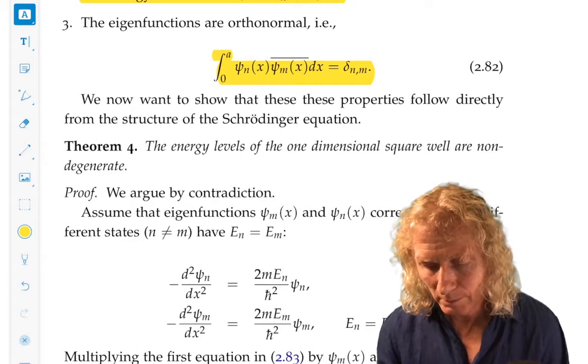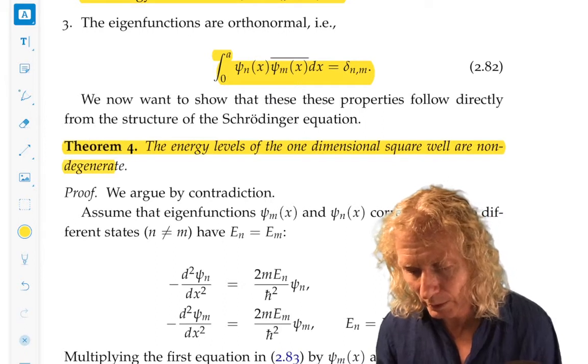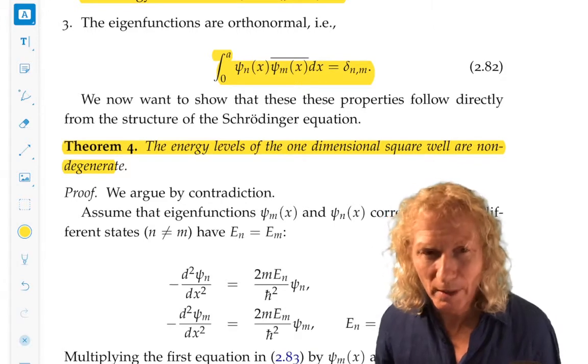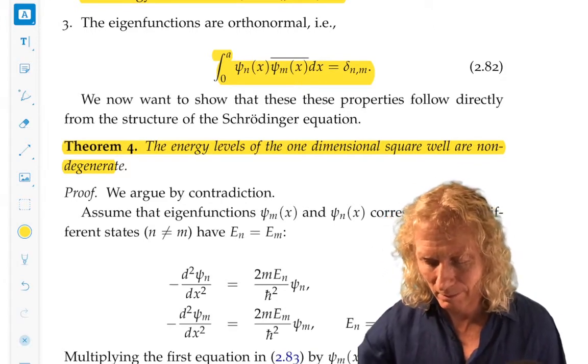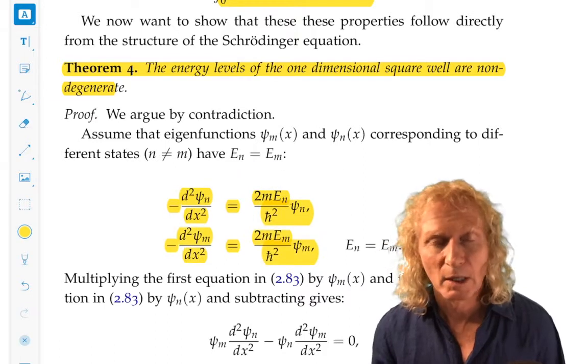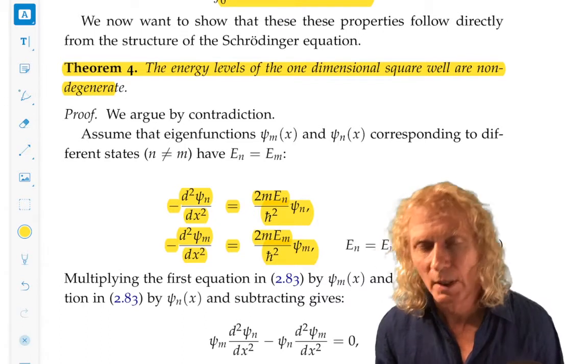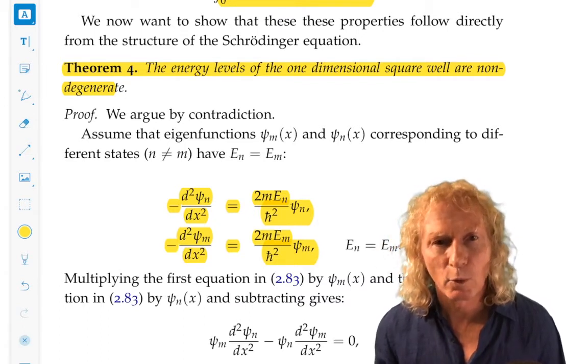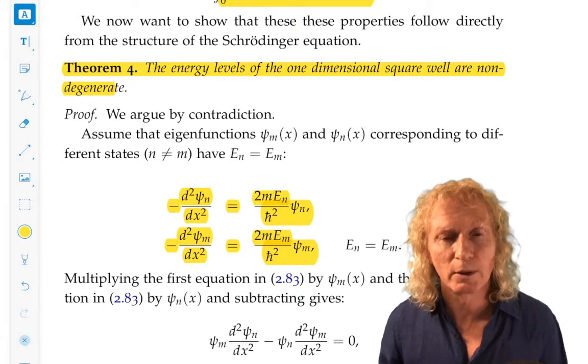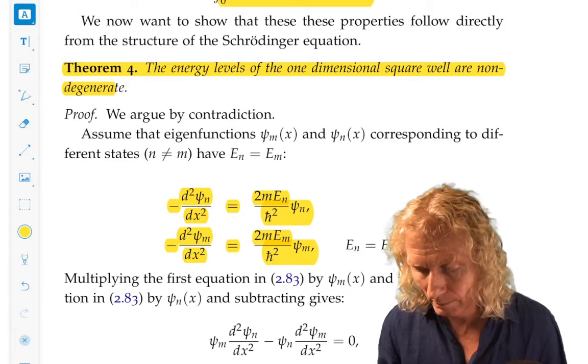So theorem four, I'm not going to go through this in any detail. This is one that says that the energy levels of the one-dimensional square well are non-degenerate. It's a proof by contradiction, and uses the time-independent Schrödinger equation for the square well. I only mention this because keep in mind that for the square well, the region between zero and A, the potential energy is zero. It's like a free particle, but in a finite range.